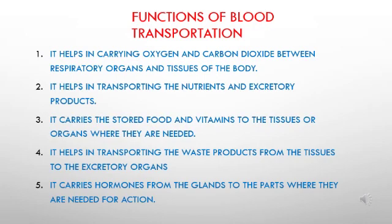Blood performs a number of important functions for the body. The first major function is transportation. It helps in carrying oxygen and carbon dioxide between respiratory organs and tissues of the body. It helps in transporting nutrients and excretory products, carries stored food and vitamins to tissues or organs where they are needed, transports waste products from tissues to the excretory organs, and carries hormones from the glands to the parts where they are needed for action.